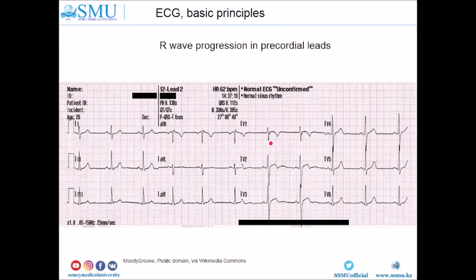Normally, the least amplitude of R-wave should be in V1. Then the height of the R-wave should progressively increase through V2, V3, V4, and V5, with the maximum in V5 or V6. If you don't have any progression in the height of the R-wave, it can represent some scars in the myocardium.